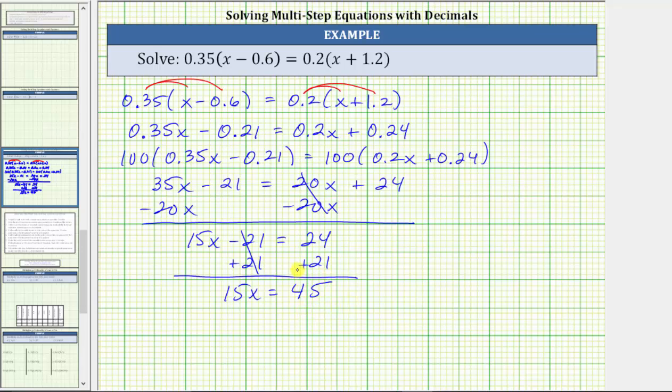Notice now we have an equation where the variable term is isolated on one side of the equation and the constant term is isolated on the other. The next step is to multiply or divide to solve the equation for x or isolate x on one side of the equation. Because 15x means 15 times x, to undo the multiplication and solve for x, the next step is divide both sides by 15.